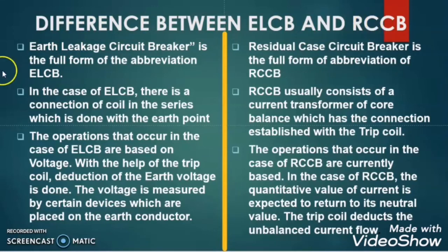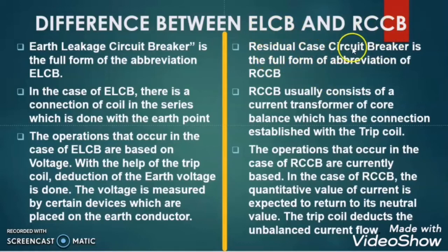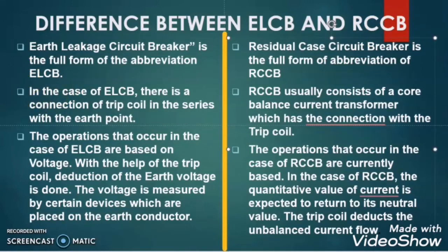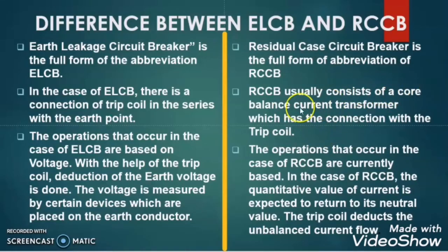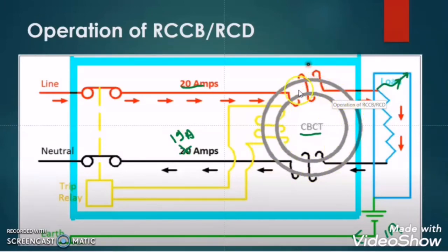The difference between ELCB and RCCB: First, ELCB stands for Earth Leakage Circuit Breaker, while RCCB stands for Residual Current Circuit Breaker. Second, in the ELCB the trip coil is in series with the earth conductor. But in the RCCB there is a core balance current transformer connected with the trip coil and trip relay.